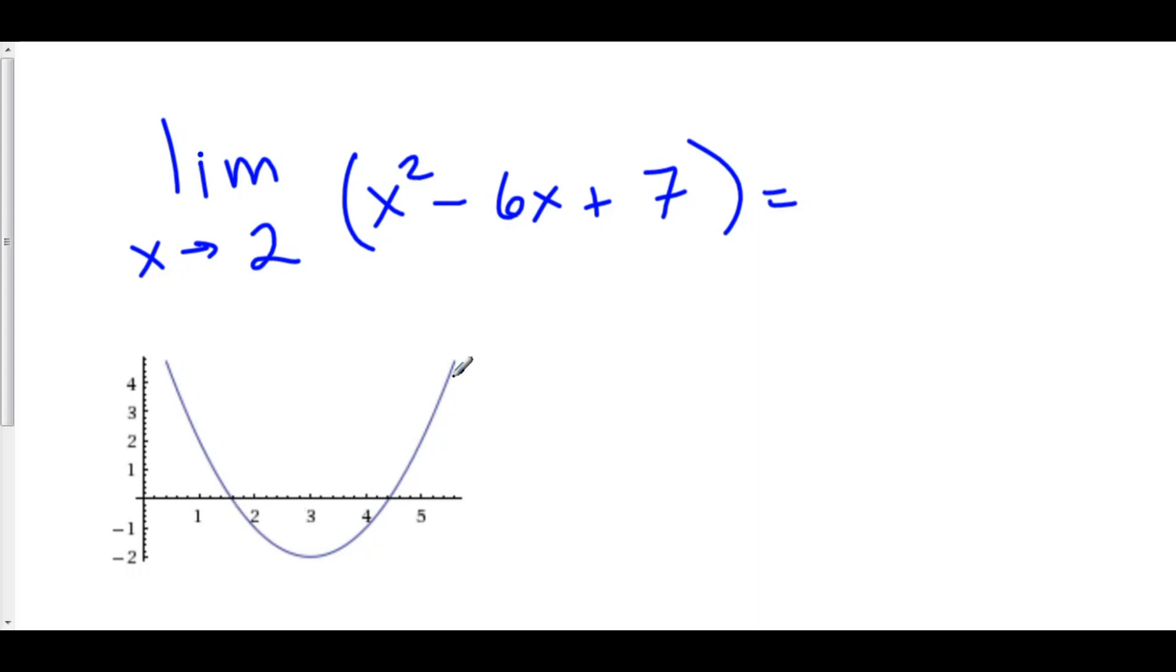So as we approach 2 from the negative side, we're approaching what looks like negative 1. And as we approach 2 from the positive side, we are also approaching what looks like negative 1. Now remember, the limit only exists if both the left-hand limit is equal to the right-hand limit.